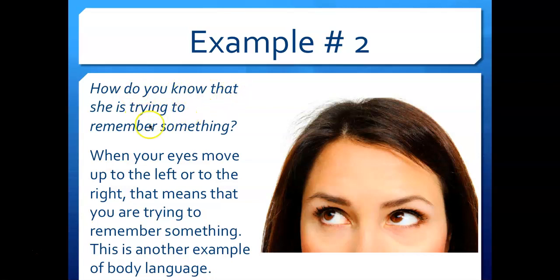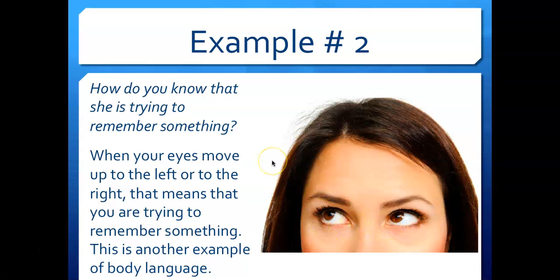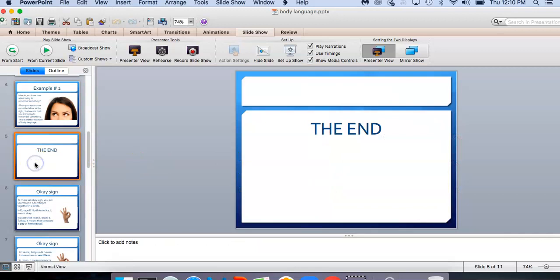Example number two: how do you know that she is trying to remember something? When your eyes move up to the left or to the right, that means you are trying to remember something — this is another example of body language. Just by looking at her eyes, you can tell she is trying to remember something that happened, without her telling you.